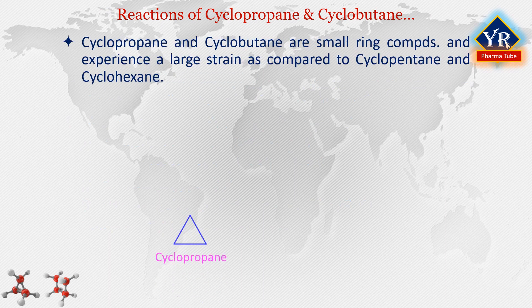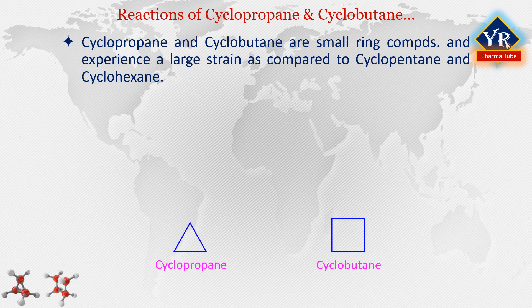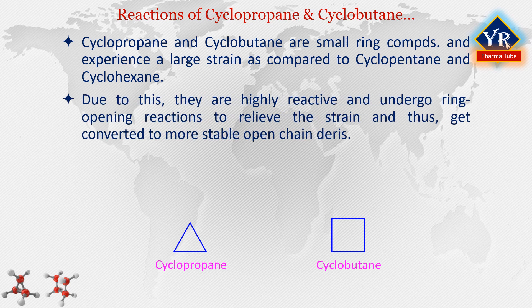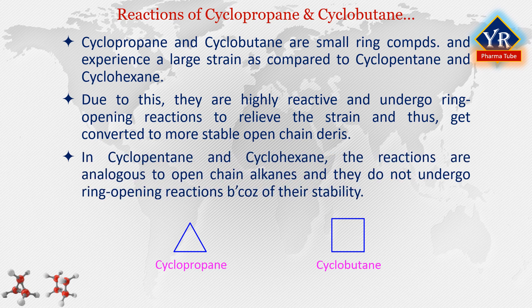Cyclopropane and cyclobutane are small ring compounds and experience a large strain as compared to cyclopentane and cyclohexane. Due to this, cyclopropane and cyclobutane are highly reactive and undergo ring opening reactions to relieve the strain and thus get converted to more stable open chain derivatives. In cyclopentane and cyclohexane, the reactions are analogous to open chain alkanes and they do not undergo ring opening reactions because of their stability.